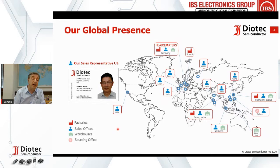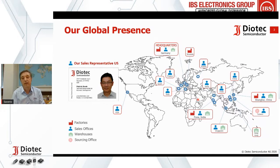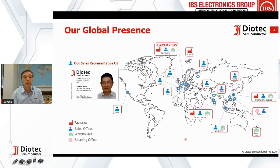We have five logistic hubs — centralized warehouses in Europe where we control the quality of all our products. We are also able to provide logistics services tailored to specific needs in different territories: India, Singapore, Hong Kong, China. This is our global presence worldwide, and we have Patrick located in California with a strong technical background.